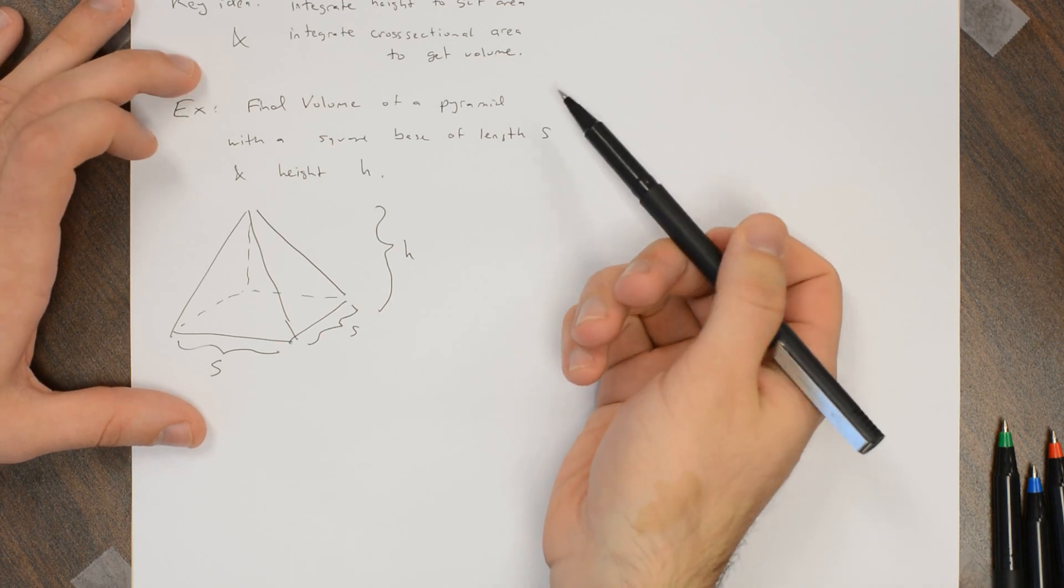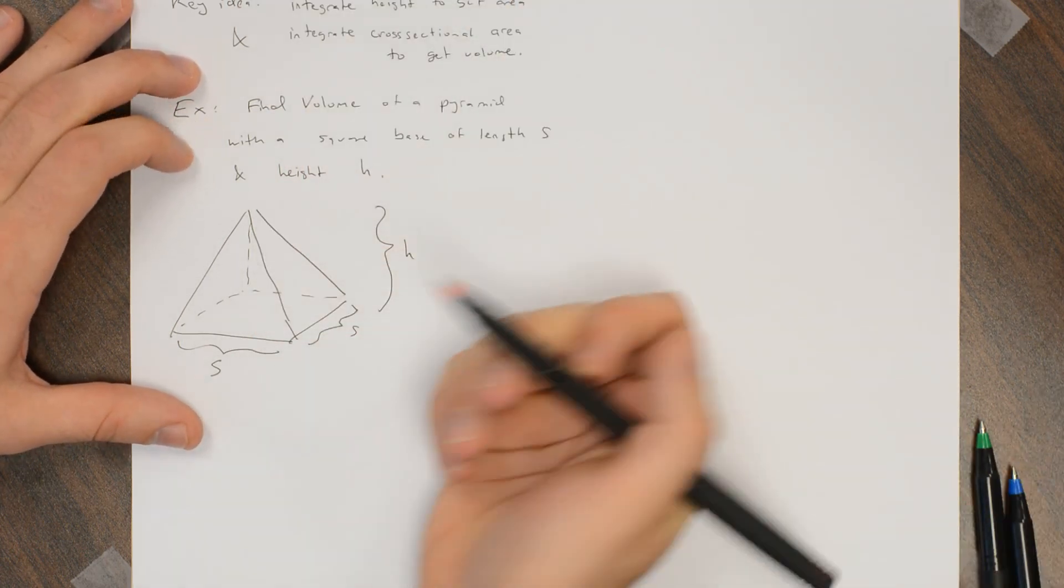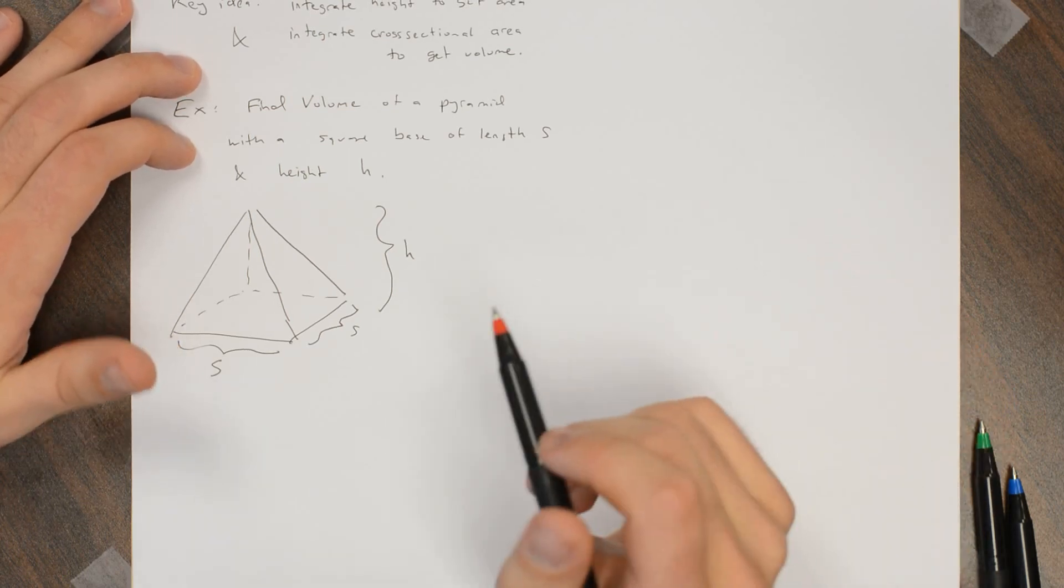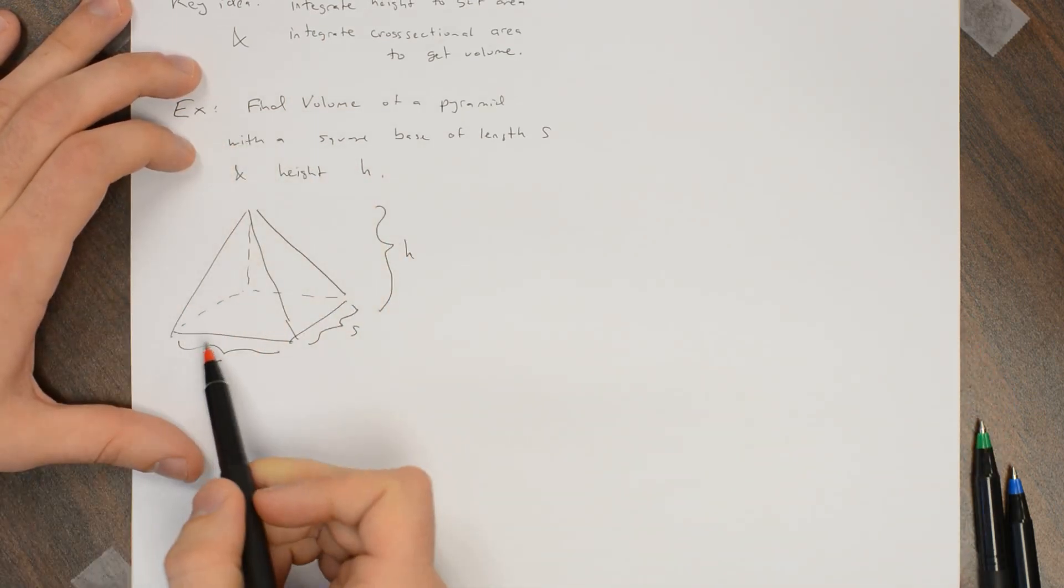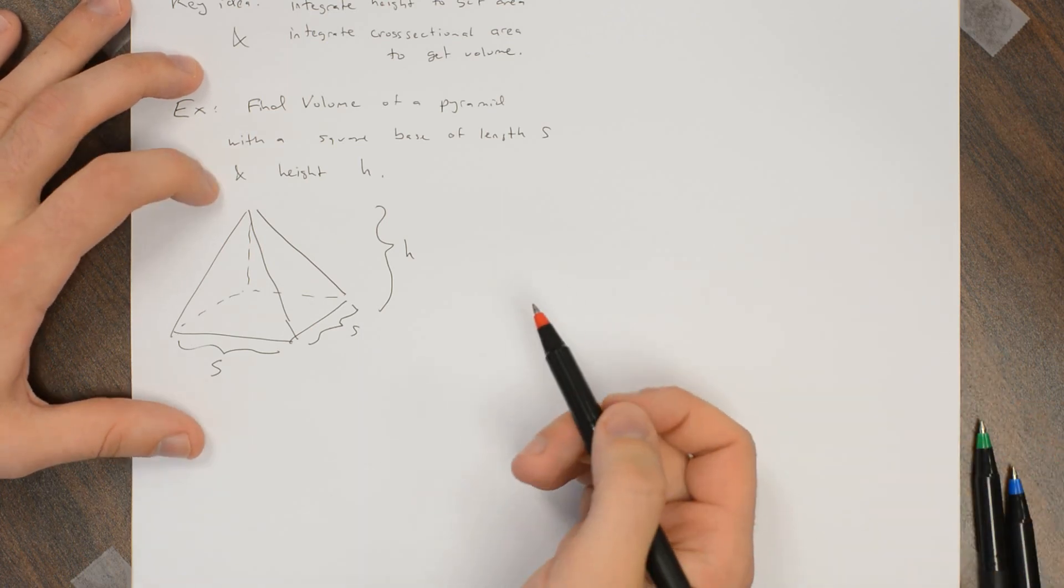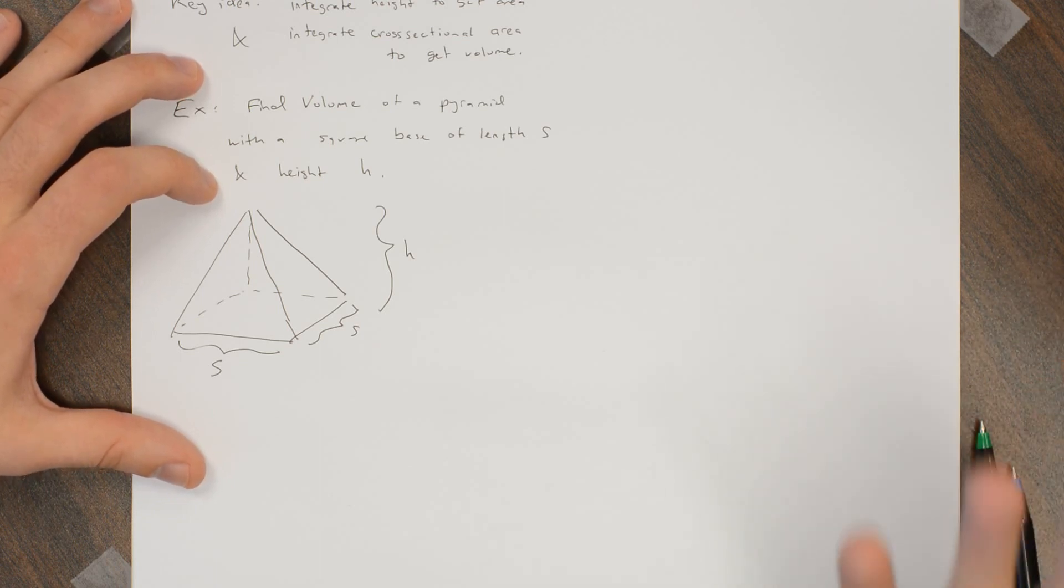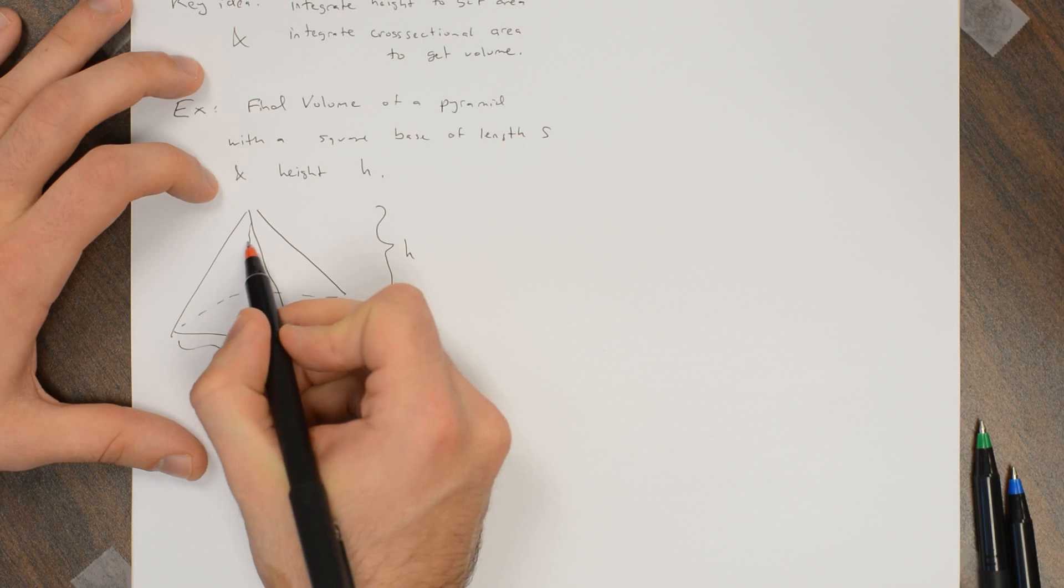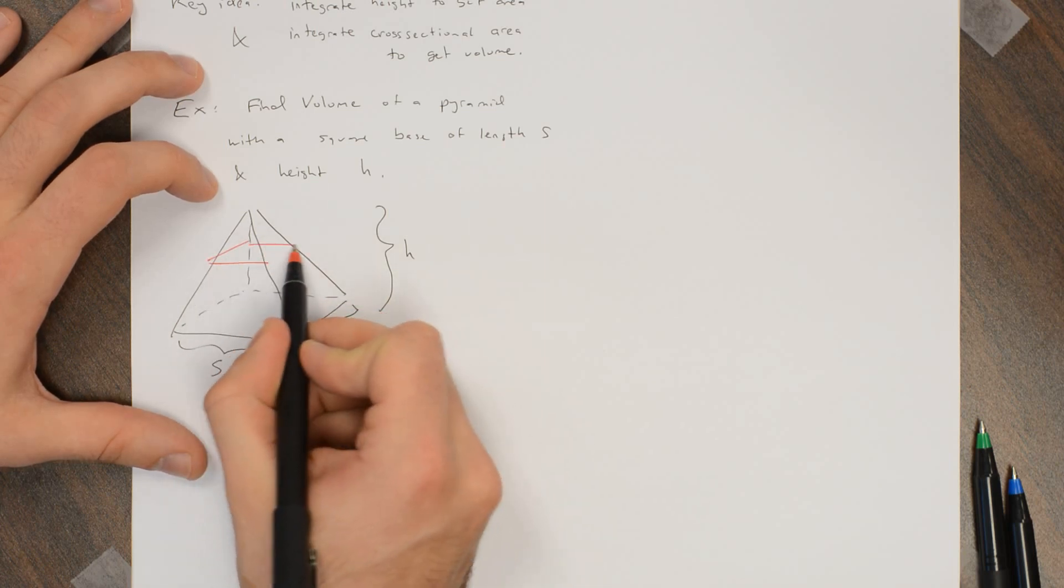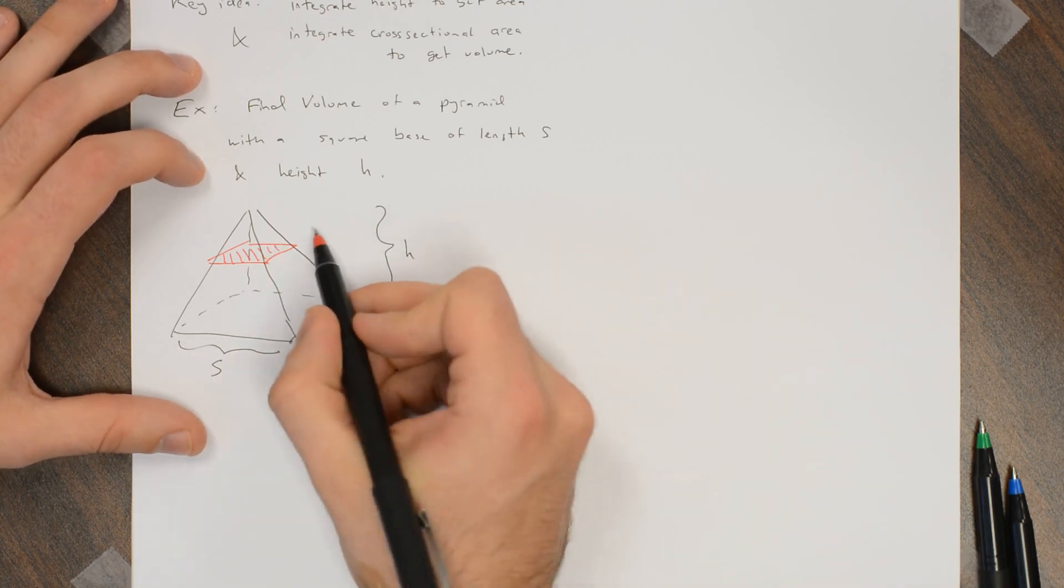And according to our sort of mantra up here, to find the volume of this pyramid I can integrate the cross-sectional area. Now, there's lots of ways I can slice it up and get cross-sections, but the easiest way is if my cross-sections are nice shapes like circles or squares or rectangles or triangles. So the easiest way here is to take these horizontal slices of the pyramid, and each one of these horizontal slices is a square.